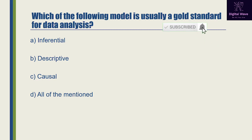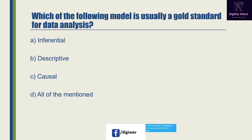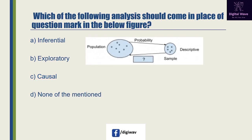Next question: which of the following model is usually a gold standard for data analysis? Option A is 'inferential', option B is 'descriptive', option C is 'causal', and the last option is all of the mentioned. The right answer will be C: causal, because a causal model is an abstract model that describes the causal mechanism of a system.